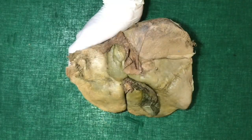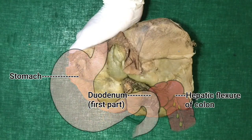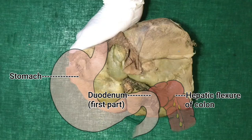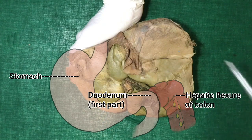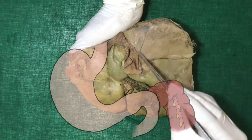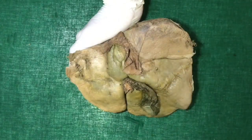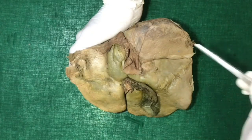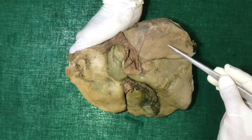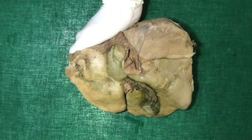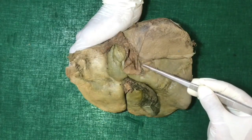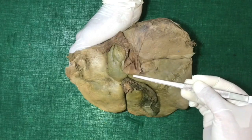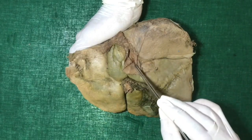The visceral surface of the liver has easily the most number of important visceral relations, important among them being the stomach, the duodenum, the hepatic flexure of the colon, the gallbladder, and the right kidney. Starting from right to left: the bare area of the liver is in direct contact with the diaphragm. On the inferior aspect of this is the right suprarenal gland, with no peritoneum in between. Next to this is the IVC, lodged deeply within a groove.